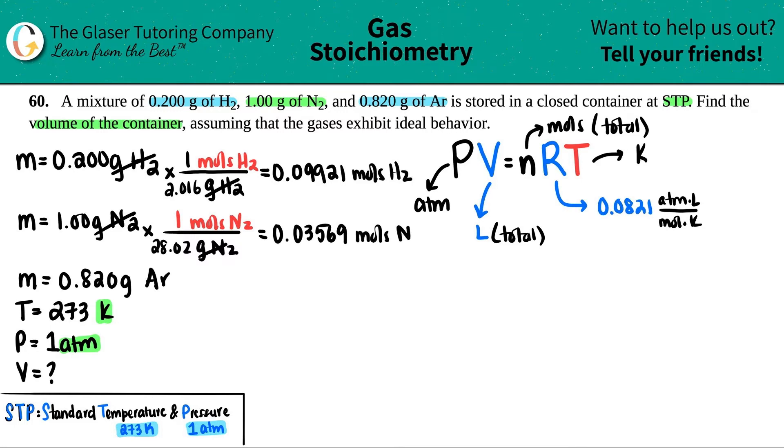Gotta do it one more time: times by the ratio, grams of Ar on the bottom, mole of Ar up top. One mole equals whatever the mass of argon is.